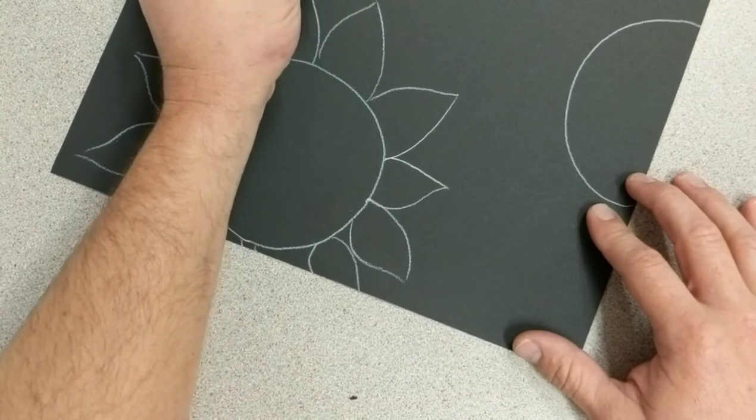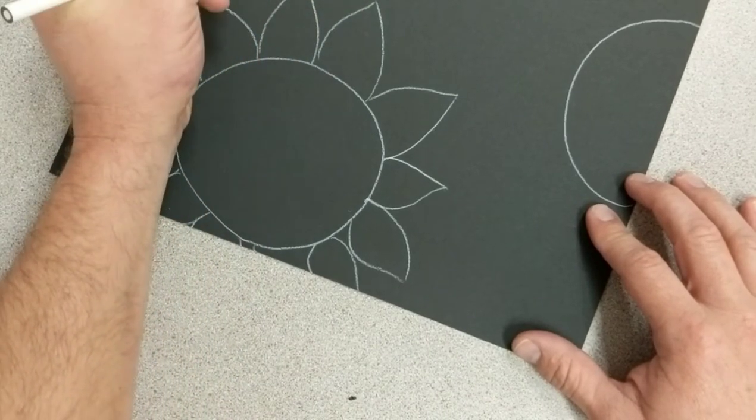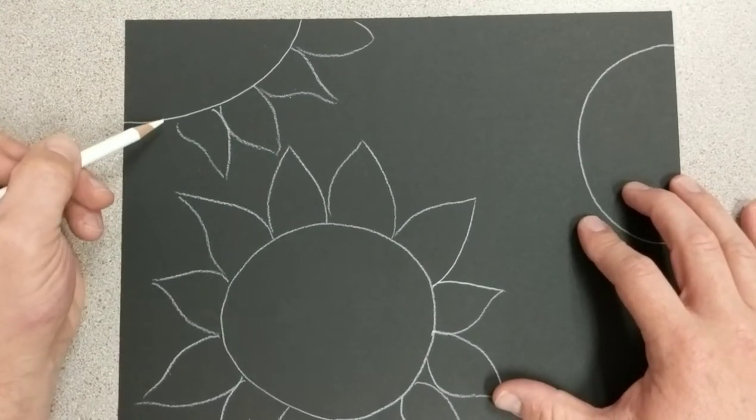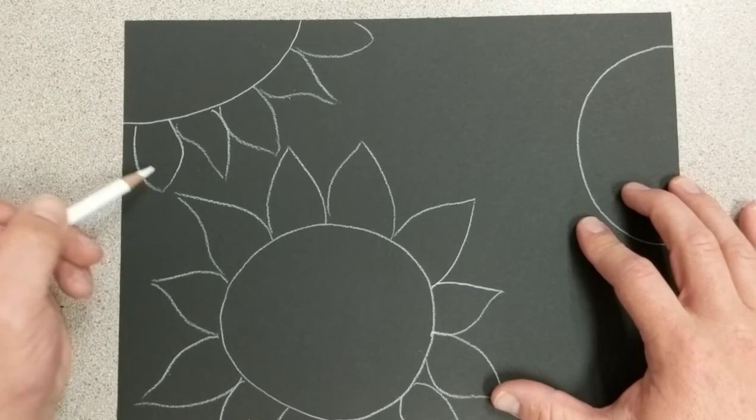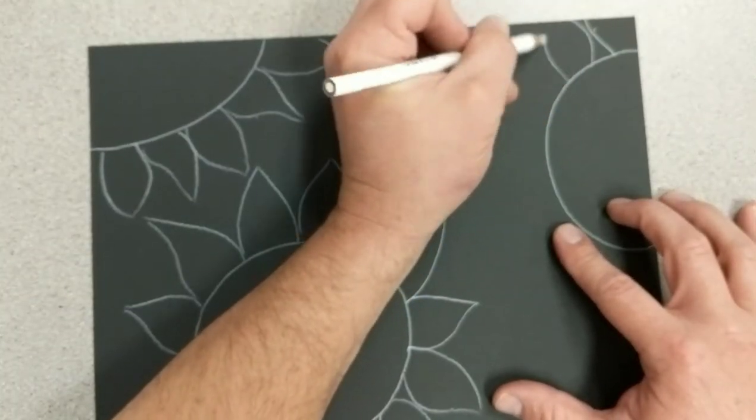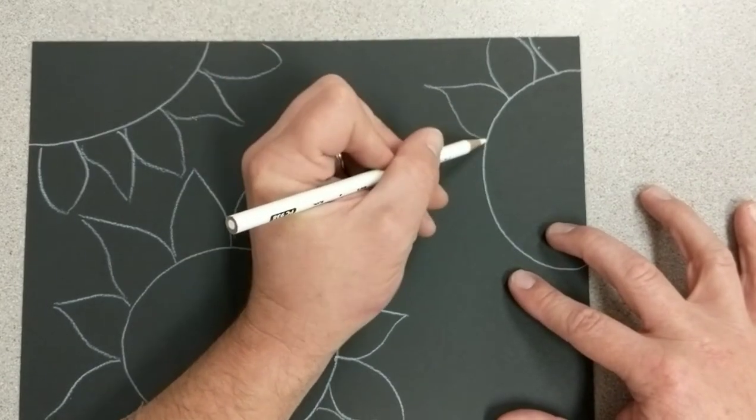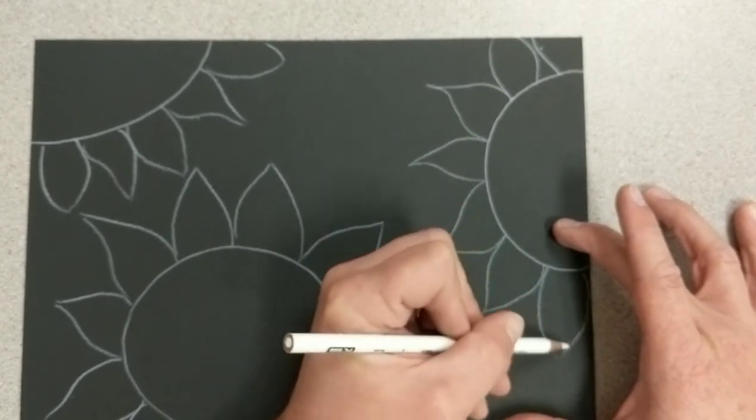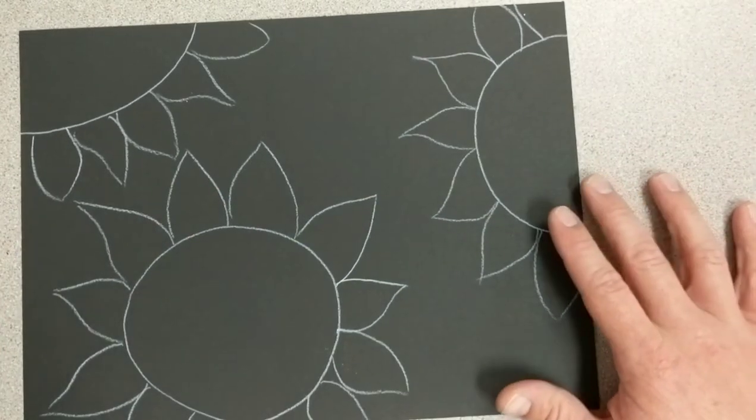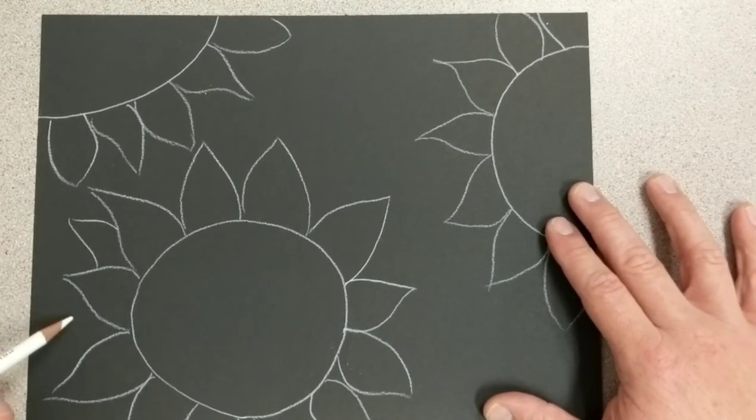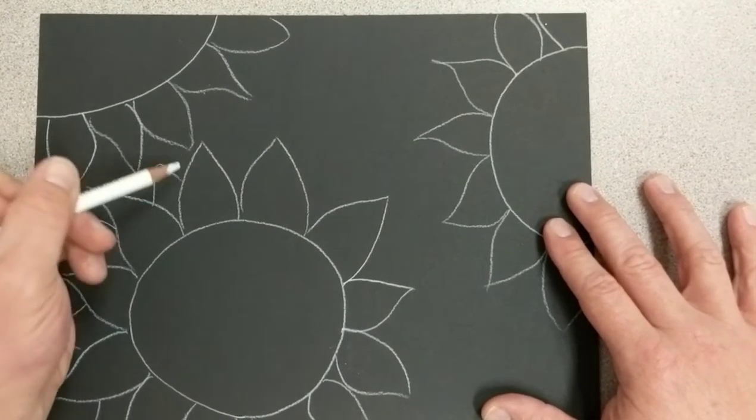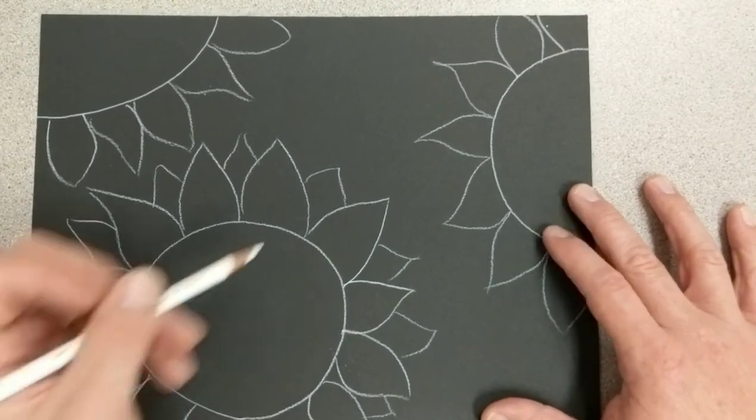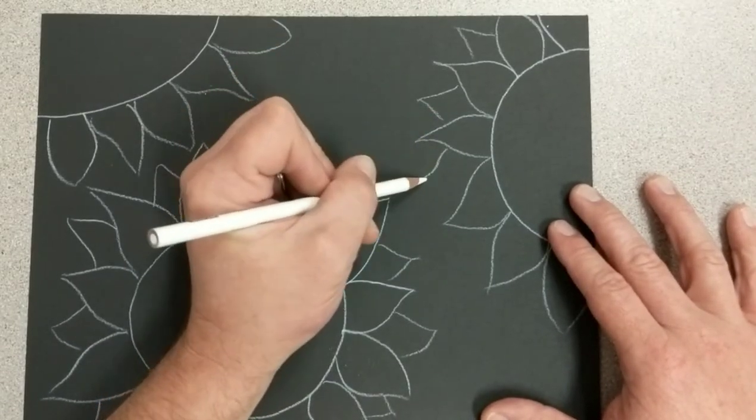We'll do the same thing over here. Each petal is different, right? So it's okay if they're not exactly the same. And then you can have another petal behind them. And you're only going to draw the top part of it so that it looks like it's overlapping.